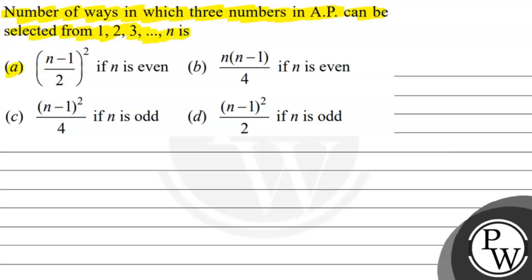Option A: square of n minus 1 divided by 2, if n is even. Option B: n into n minus 1 divided by 4, if n is even. Option C: square of n minus 1 divided by 4, if n is odd. Option D: square of n minus 1 divided by 2, if n is odd.